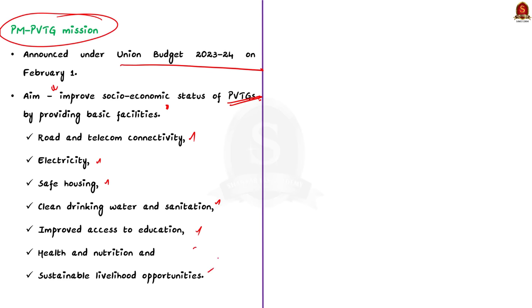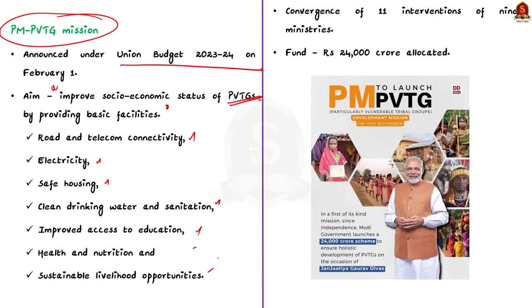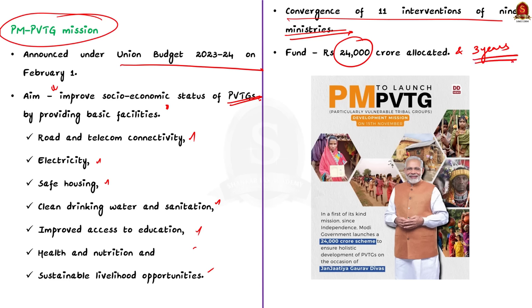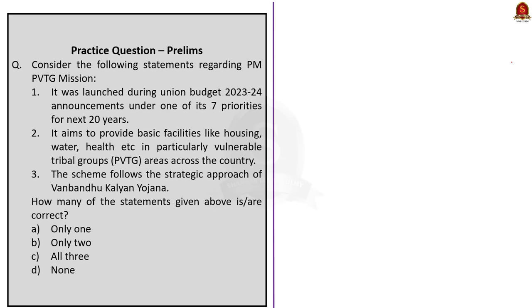The scheme will be implemented through convergence of 11 interventions of 9 ministries. For example, under Pradhan Mantri Gram Sadak Yojana, Pradhan Mantri Gramin Awas Yojana, and Jal Jeevan Mission, some scheme norms will be relaxed to cover remote habitations. The central government has allotted 24,000 crores for this purpose, and the mission will be implemented over the next three years. This covers the two schemes: Viksit Bharat Sankalp Yatra and PM Particularly Vulnerable Tribal Group Mission. With these learned points, let us conclude and take up the next article.